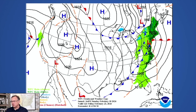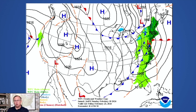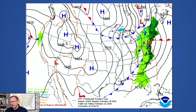The lines on the weather map are isobars — areas of equal pressure. When those lines are really close together, that means a tight pressure gradient and it would typically be a lot windier.